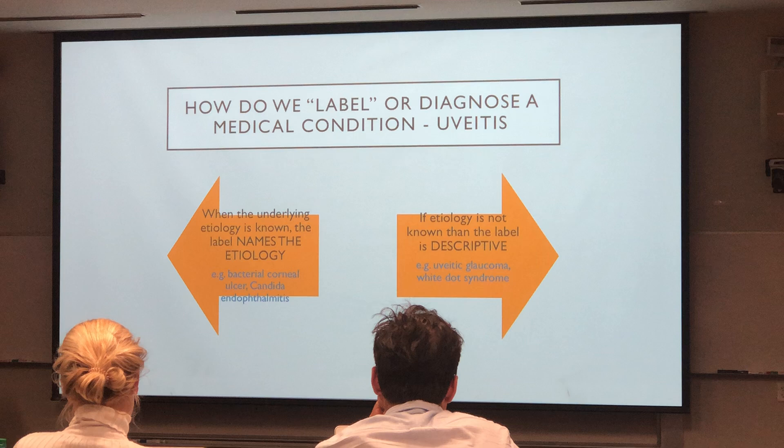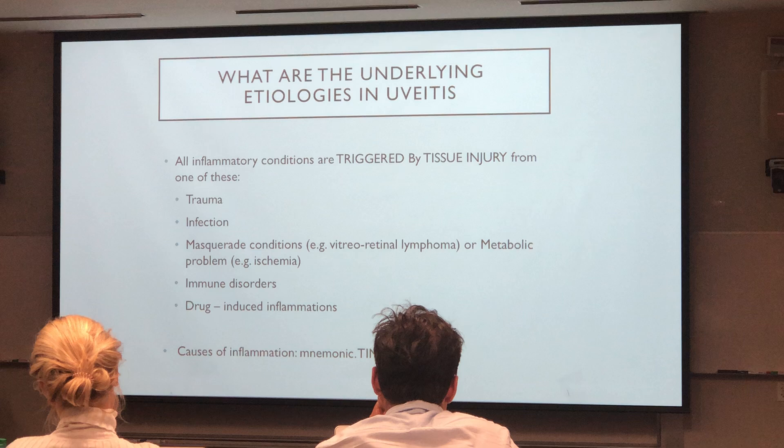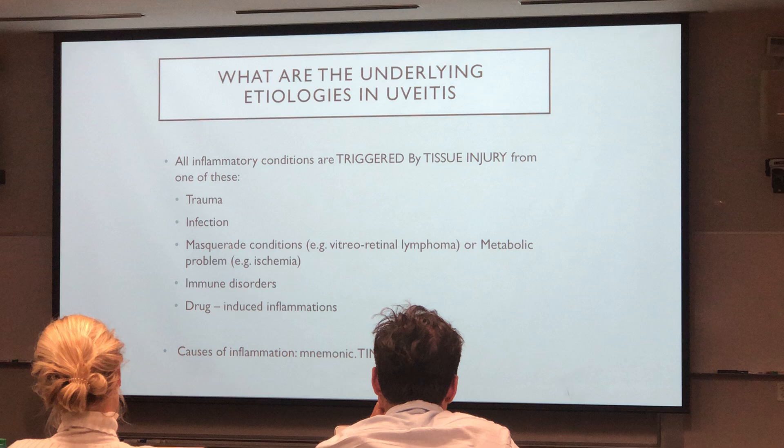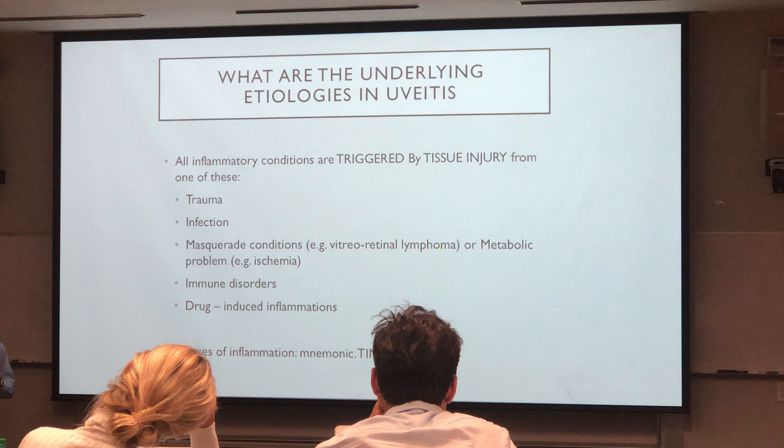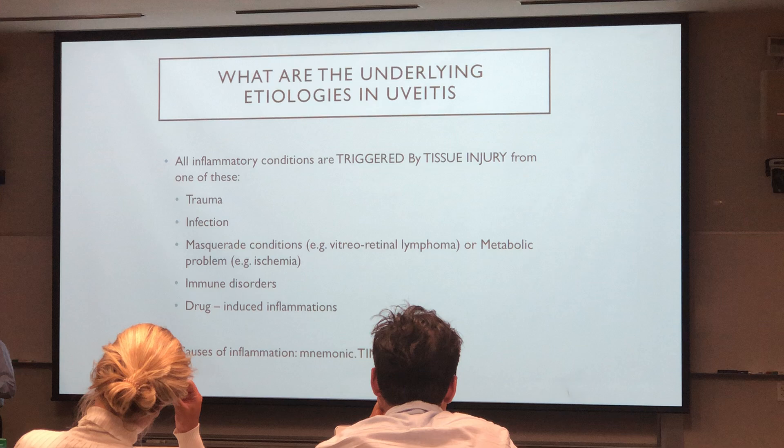We'll say it's uveitic glaucoma, or it's a white dot syndrome. Looking at the first category — what are the underlying etiologies in UBIDs? Often I will be asked by patients what caused my uveitis. My simple explanation is your uveitis is triggered by an injury, and that injury can be caused by one of a half a dozen items.